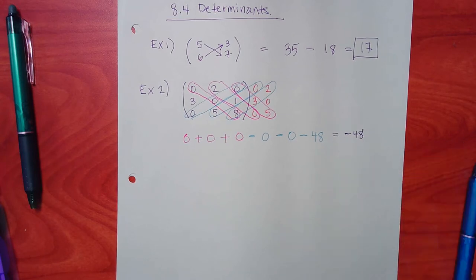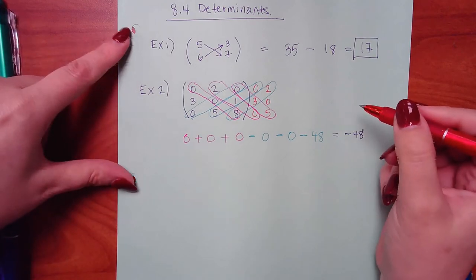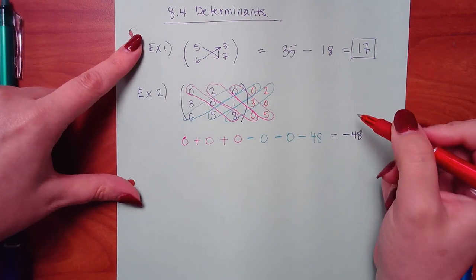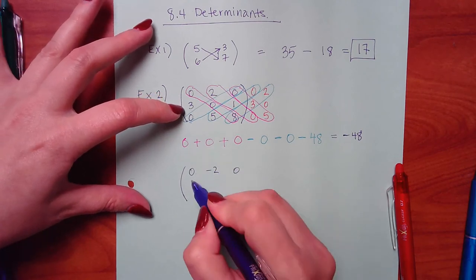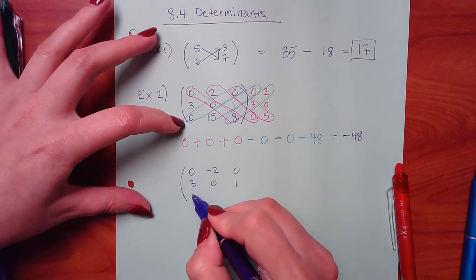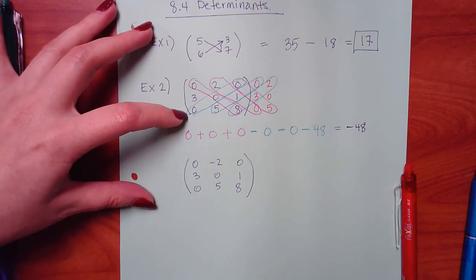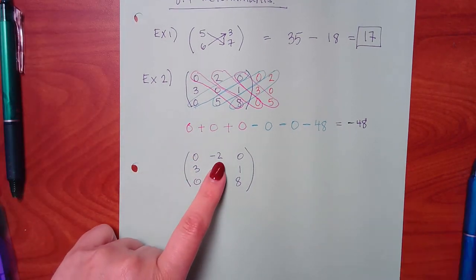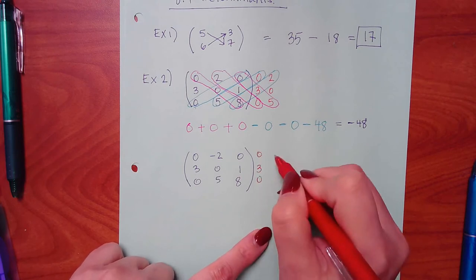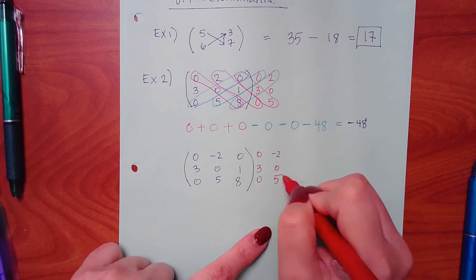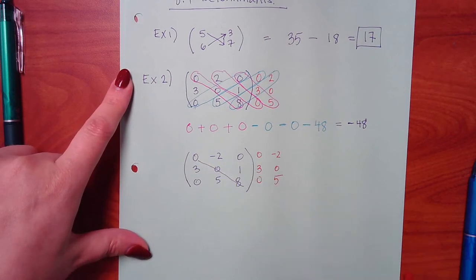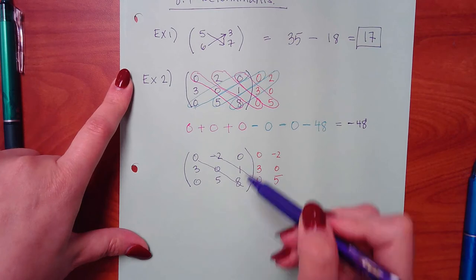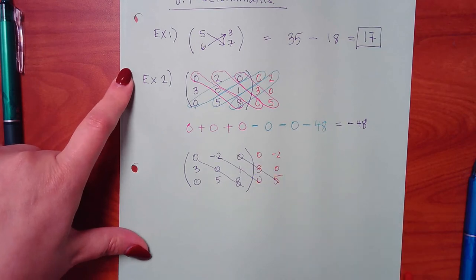Now, just for argument's sake, let's pretend that the 2 was negative. If that 2 was negative, I would do the same thing as I did before. Rewrite the first two rows. But notice what happens. When I multiply these, I get 0. When I multiply those, I still get 0. When I multiply those, I still get 0. So the front guy is just a big fat 0.